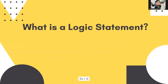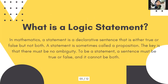Let us define first what is a logic statement. In mathematics, a statement is a declarative sentence that is either true or false, but not both. A statement is sometimes called a proposition. The key is that there must be no ambiguity — by ambiguity, we mean poorly defined. So to be a statement, a sentence must be true or false and it cannot be both.